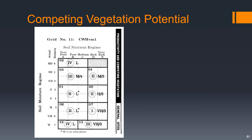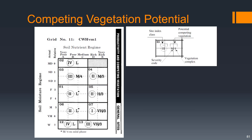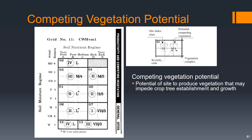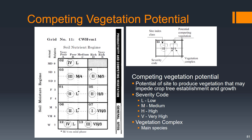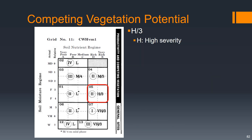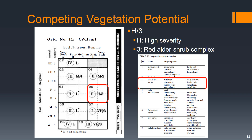If we're managing for timber, we might also be interested in the potential for competing vegetation, which is also in this table. This is the potential of the site to produce vegetation that may impede crop tree establishment and growth. The letter is a severity code indicating how severe that competing vegetation potential is, and the number is a vegetation complex describing the main species. In our example, our site has H for high severity, and the vegetation we would expect is a red alder shrub complex.